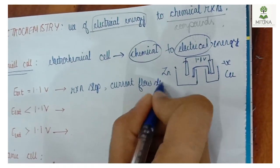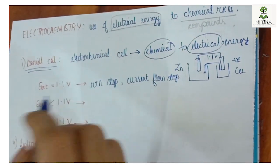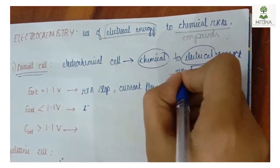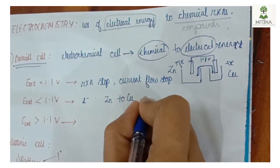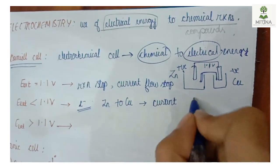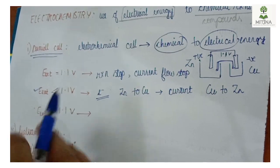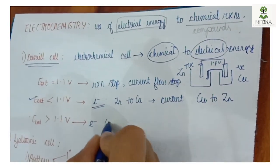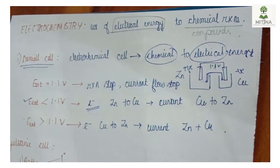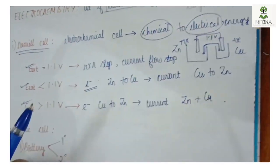This is the external potential at 1.1V. This is the electron flow from zinc to copper. The electron flow is in the opposite direction of the current flow. This is the electricity of the current flow and the external potential at 1.1V — the electron flow is opposite.